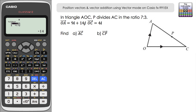Moving on to question two: we have a triangle AOC with P dividing line AC in the ratio 7 to 3. Vector OA is 9i plus 14j and vector OC is 4i — these are i and j vectors, not column vectors. The calculator always works with column vectors, but provided we can translate between the two, we can use it. We need to find vector AC and vector CP.